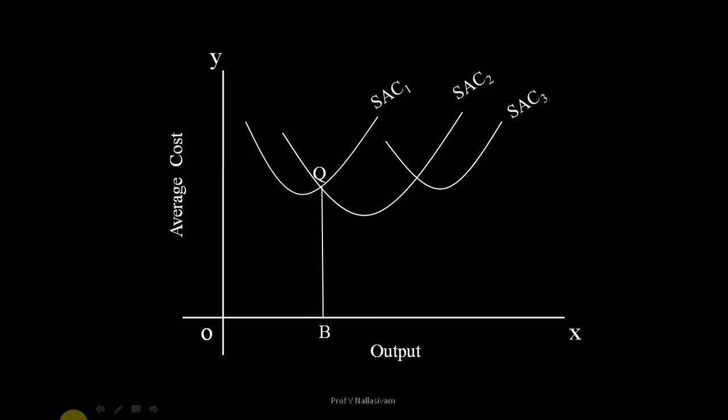Beyond OB level of output, the firm will go for medium size plant. When output level is OC, the average cost of medium size plant is less than the average cost of small size plant.